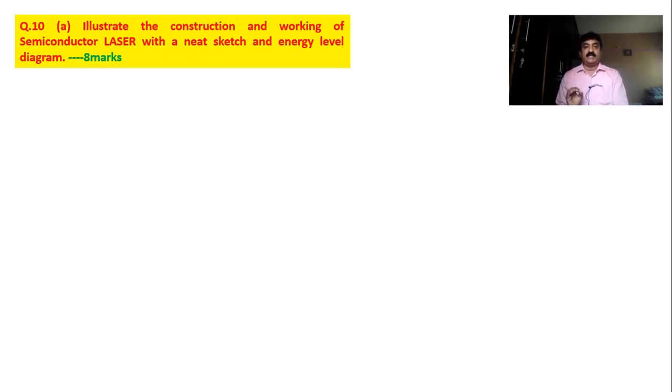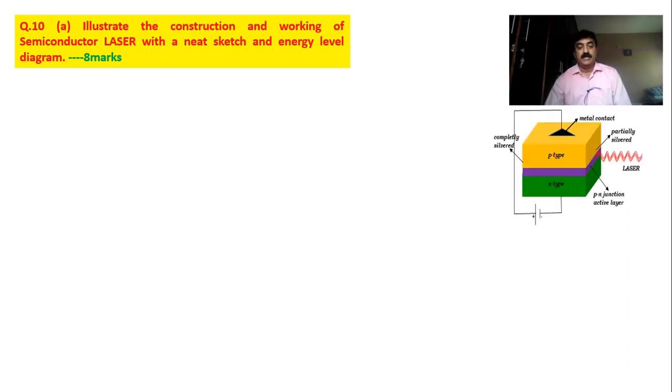The energy level diagram will give weight to your answer. For semiconductor laser construction: it consists of two types — p-type and n-type semiconductor joined together forming a junction. It has six faces — three pairs of opposite faces. The front and back faces are polished and silvered; one side is partially silvered, the other is completely silvered, so the region between these two faces acts as the active region where photons travel to and fro and suffer reflection.